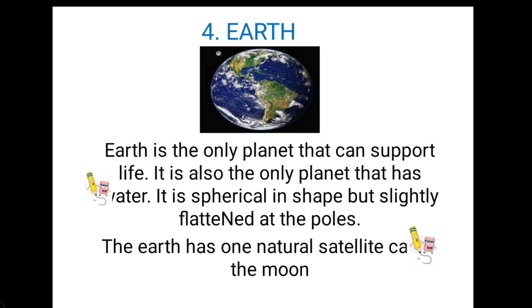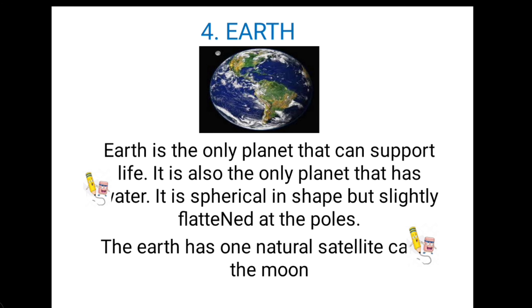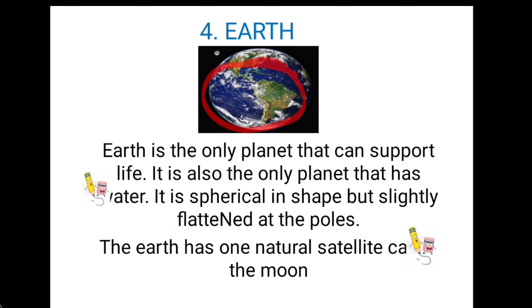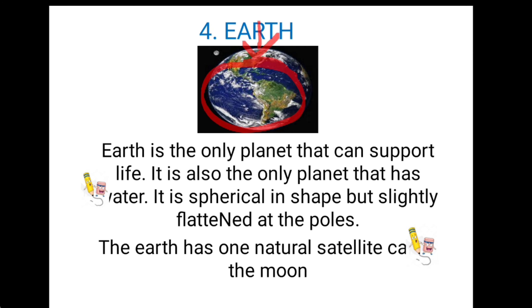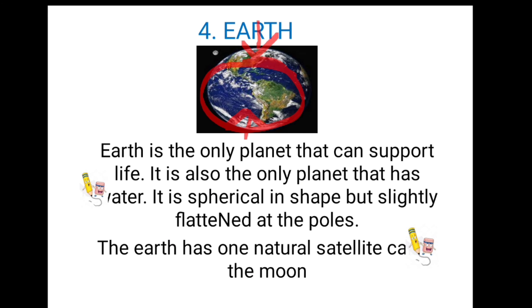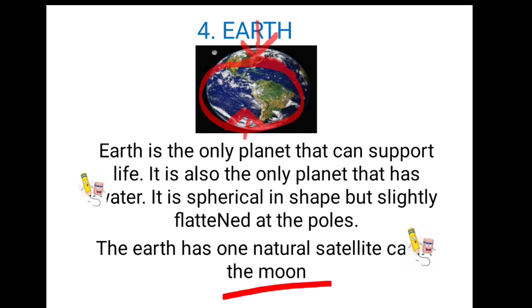Earth: Earth is the only planet that can support life. It is also the only planet that has water. It is spherical in shape — you can see here it is spherical in shape but slightly flattened towards the poles. The Earth has one natural satellite called the Moon.